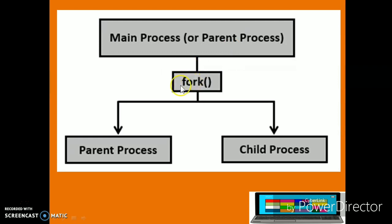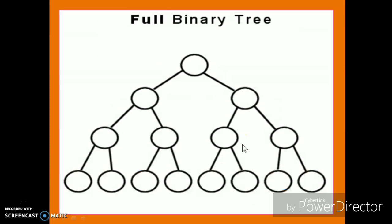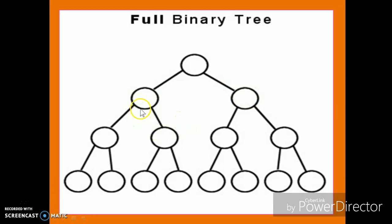Whenever you call the fork system call it will create a parent and a child process. Suppose we are calling the fork system call three times. The first fork call creates a child and the parent itself. The second call creates a child-parent and a parent-child. The third fork call creates child-parent-child-parent. So we have a total of eight executions and seven child processes.